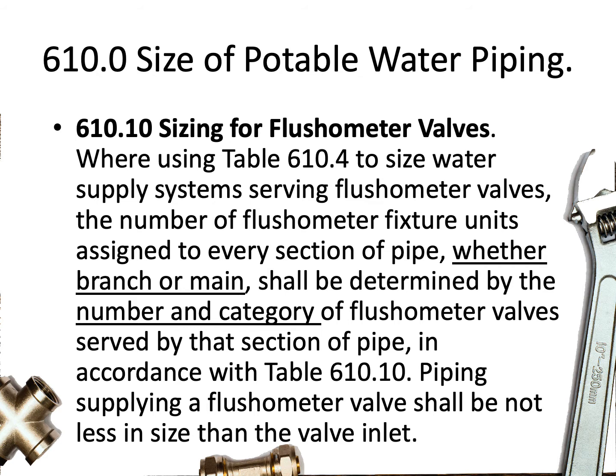So what are the key points here in this section of the plumbing code? Well, number one is if we use Table 610.4 to size a water distribution system, and that system has flushometer valves, we are required to assign fixture units to those flushometer valves in accordance with Table 610.10.